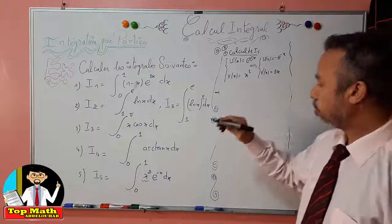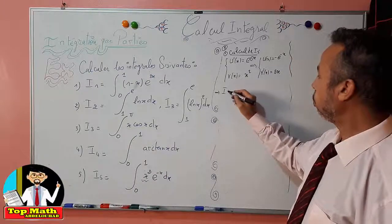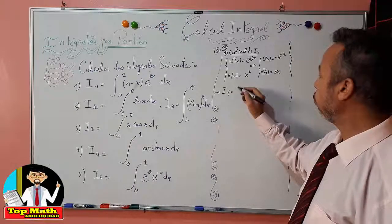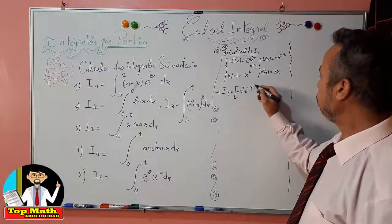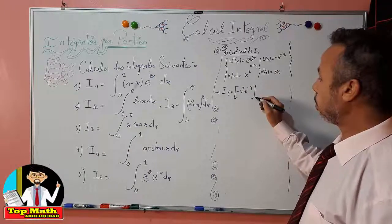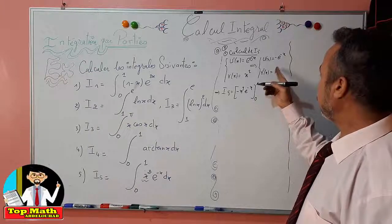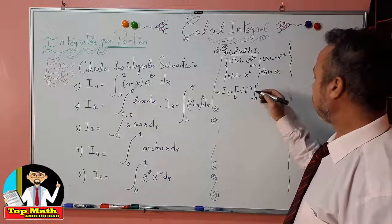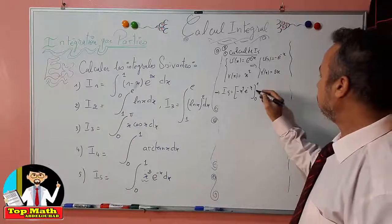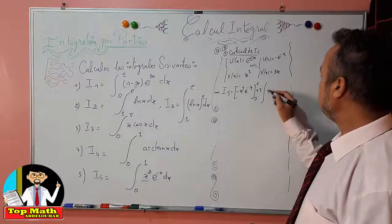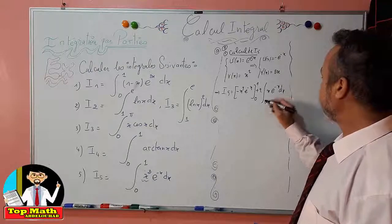For the first integration by parts, we find I5 = [uv] = [x² · (−e^(−x))] from 0 to 1, and applying linearity of the integral, plus 2 times the integral from 0 to 1 of x · e^(−x) dx.